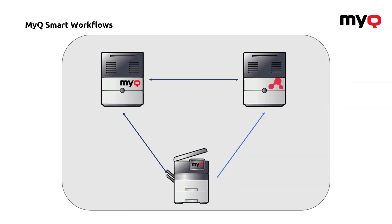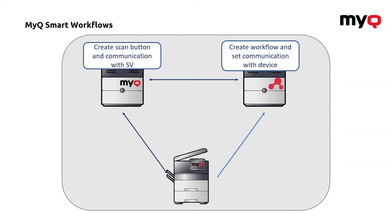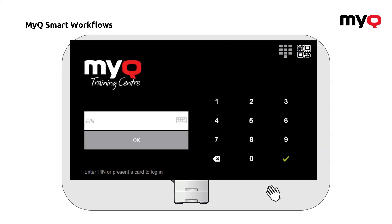Here on this slide I would like to show you how it works. As you can see, there are three main components: the MyQ server, the engine that runs in the background, and the machine with the embedded terminal. The admin has to create a workflow and communication with the device on the engine, and create the button on MyQ's side — those two then meet at the machine. For the common user, there is no difference compared to the standard solution.